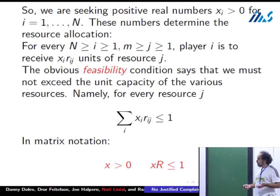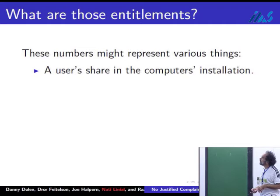If you're used to linear programming, what we're looking for looks quite familiar. But wait, this is not a linear programming problem, you'll see soon. What we're looking for is a positive vector x such that xR is less than one, where big R is the matrix whose i,j entry is r_ij, how much player i is requesting from resource j.